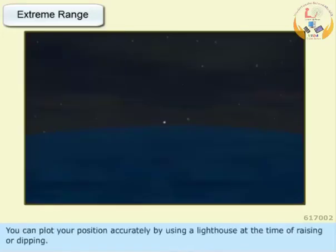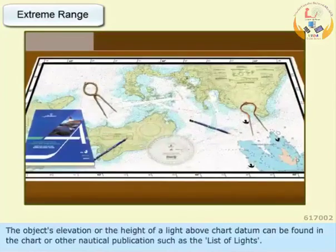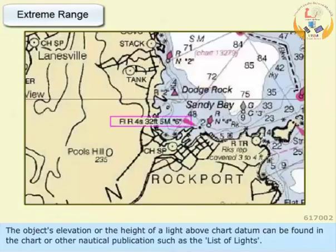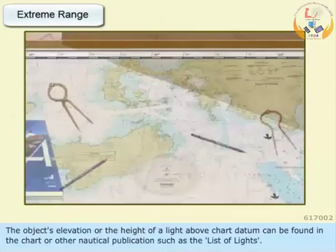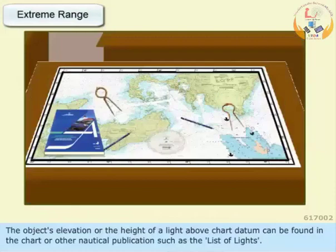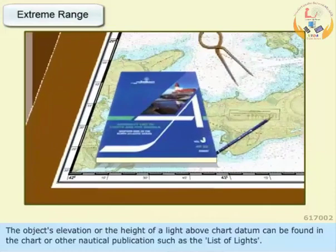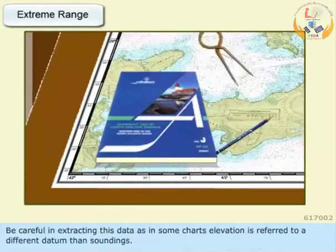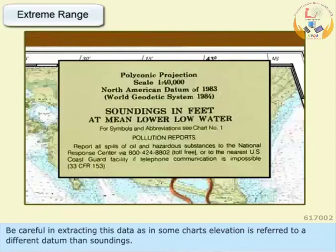You can plot your position accurately by using a lighthouse at the time of raising or dipping. The object's elevation, or the height of a light above chart datum, can be found in the chart or other nautical publications such as the list of lights. Be careful in extracting this data, as in some charts elevation is referred to a different datum than soundings.